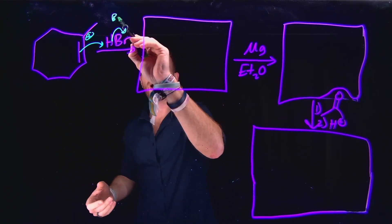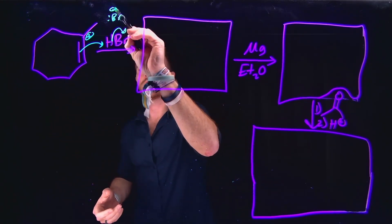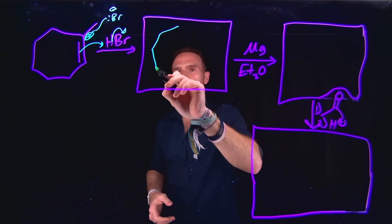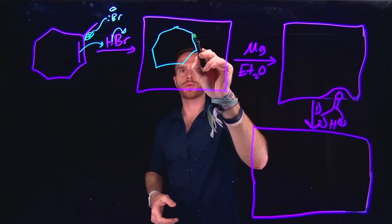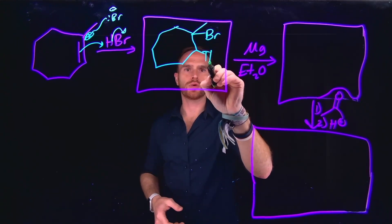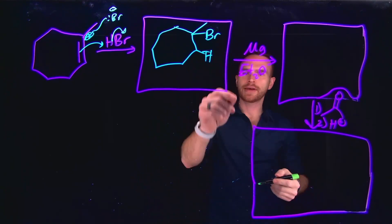And then subsequently what will happen is that bromide that was kicked off will actually attack at that position and add there. So for that reason, the molecule that is generated here is going to add the bromine at the most substituted position, and the hydrogen will go to the other carbon atom.